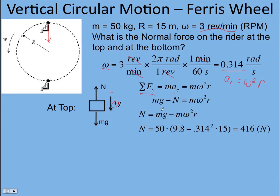Solving for the normal force, you can add N over here and subtract m omega squared from both sides. You should be able to show it comes out to that. Then you can factor out the m if you want. And so you get 50 times 9.8 minus 0.314 squared times the radius.